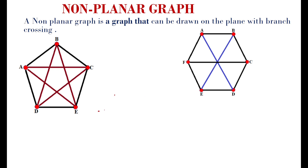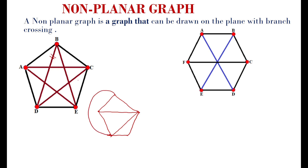First of all, I am going to redraw the graph. Here, no need to change the place of this branch, and here also no need to change this branch. Take this branch and draw it outwardly, and take this branch and draw it outwardly. Now — one, two, three, four. Inside we are having five branches. Four branches are over, so another one branch is there from E to E. If we draw inside, there may be a crossing occurs. If we draw outwardly also, there may be a crossing occurs. So this is the non-planar graph.